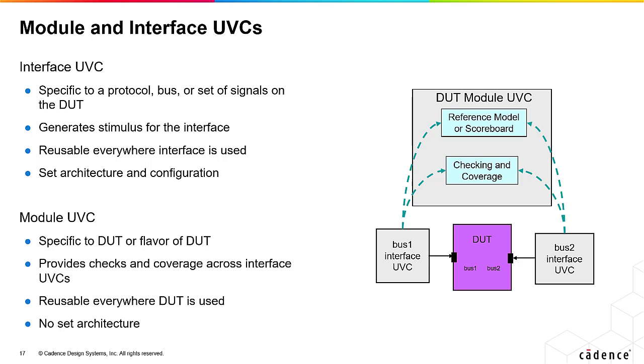Module UVCs are specific to a DUT or even a particular version of DUT. They provide checks and coverage for the DUT. For example, capturing input and output data from the interface UVCs for scoreboarding. They are reusable everywhere the DUT is used. Unlike interface UVCs, they do not have a standard set architecture.